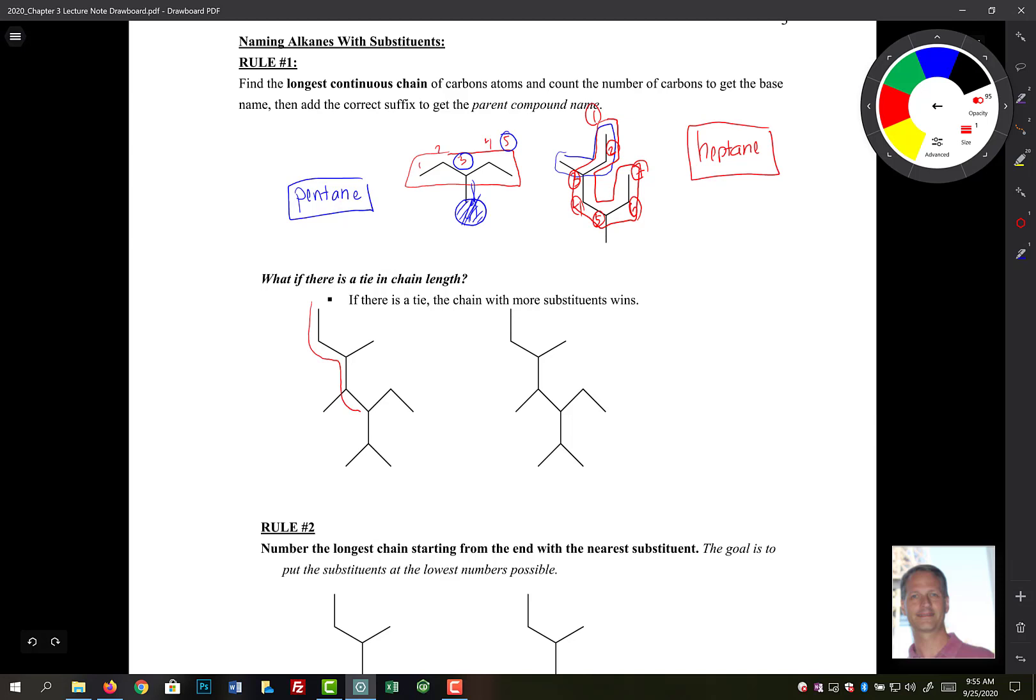And at this point, we could come down here like this. That's one kind of carbon chain there. Or we could come down here like this and go this direction. So let's count it up. See what the number of carbons are here.